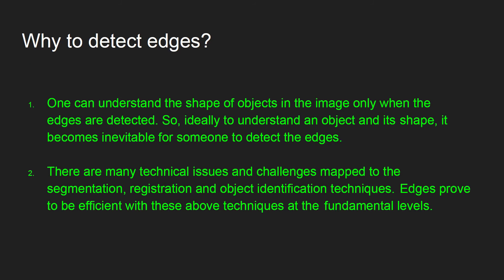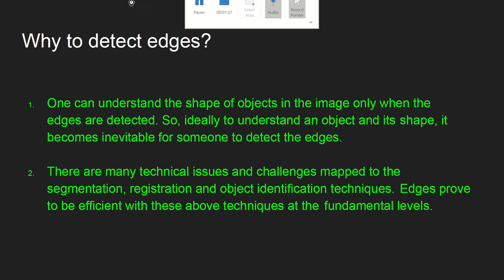It's very important to understand the reasons behind why we detect edges. One can understand the shape of objects perfectly and precisely when edges are detected. There are multiple challenges with segmentation, registration, and object identification techniques. Edges are used as one of the most important preliminary steps in those processes — segmentation, registration, or object identification. Edges are nothing but the borders of an object available in an image, and you can detect them easily with OpenCV.